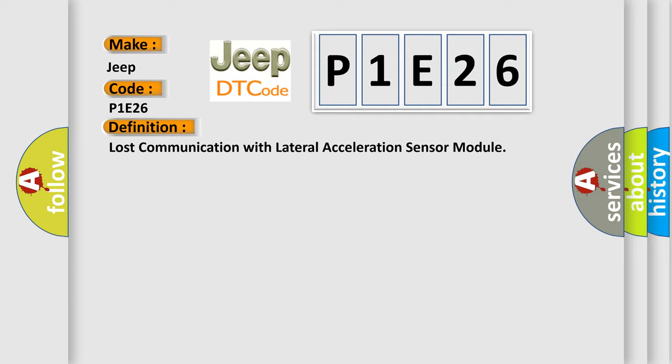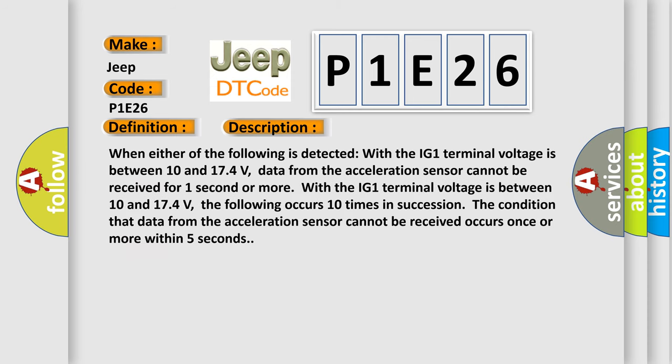And now this is a short description of this DTC code. When either of the following is detected with the IG-1 terminal voltage between 10 and 174 volts: data from the acceleration sensor cannot be received for one second or more, or the condition that data from the acceleration sensor cannot be received occurs once or more within five seconds, happening 10 times in succession.